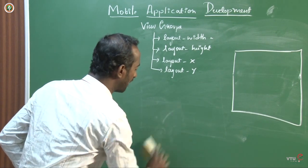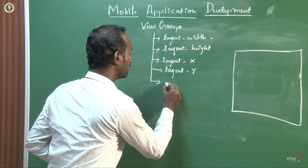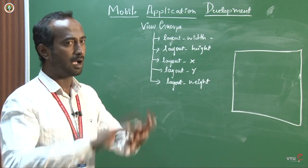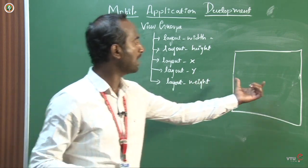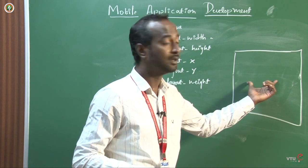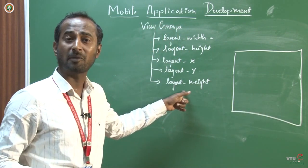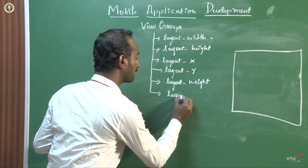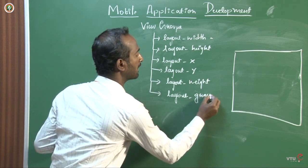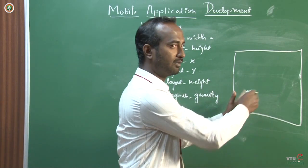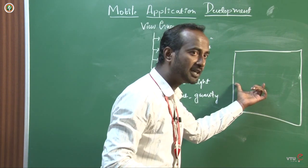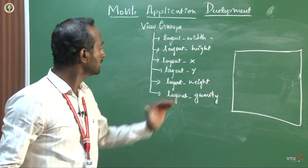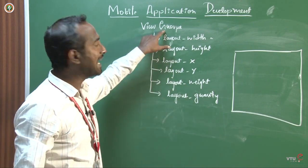So those are four attributes discussed. The next one is layout weight, which defines how a component should appear in your layout — whether it should occupy more space. After that is layout gravity, which determines whether you want a button to appear toward the left, right, center, top, or bottom side. That's how you provide gravity for a particular view inside the view group.